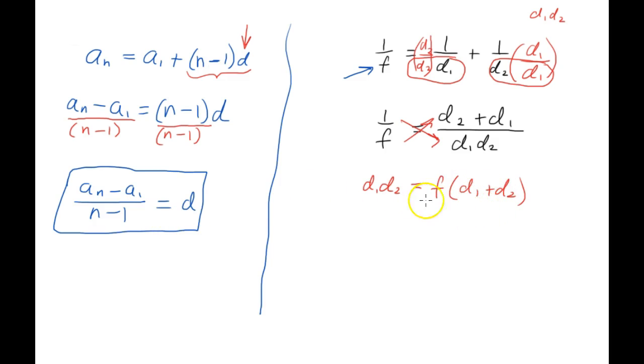Now this ending is very similar to this other problem. All we're going to do is divide each side by d sub 1 plus d sub 2 and we will end up with our answer. So in the end we have d sub 1 times d sub 2 over d sub 1 plus d sub 2 equals f.